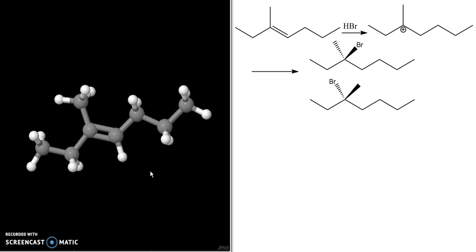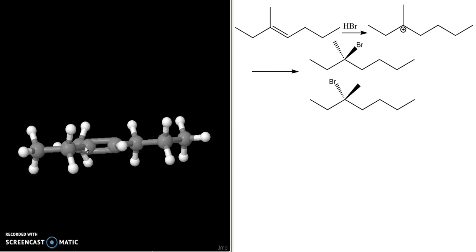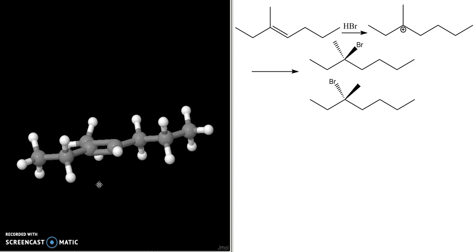Now I want to look at this on my three-dimensional models also. This is my alkene right here. You can see that this alkene bond is planar. The atoms involved in the pi bond are trigonal planar, sp2 hybridized.